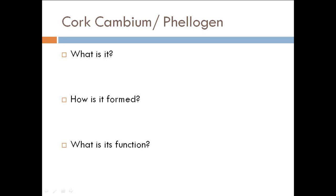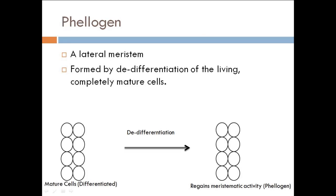If I talk about cork cambium: what is it, how is it formed, and what is its function? Let's talk about what it is. It is also called phellogen and it is a lateral meristem that is responsible for production of cork cells. How is it formed? Formed by dedifferentiation of the living, completely mature cells.